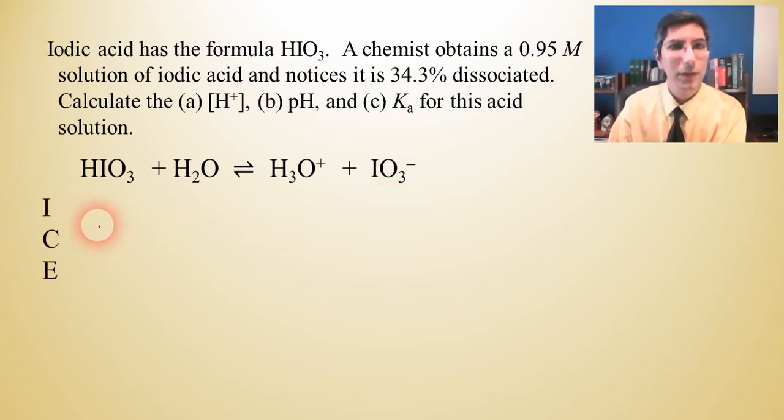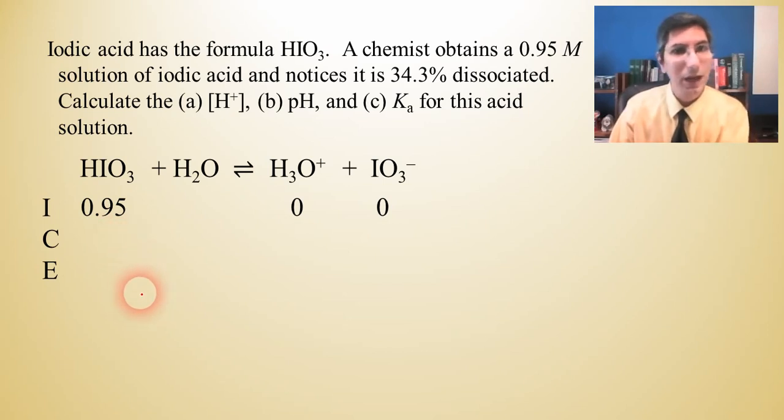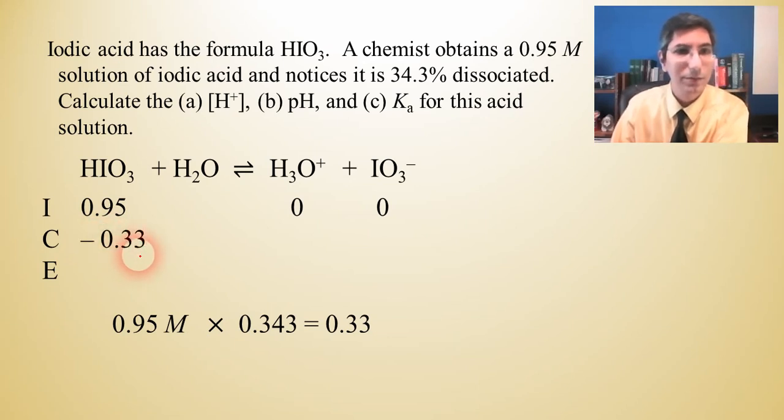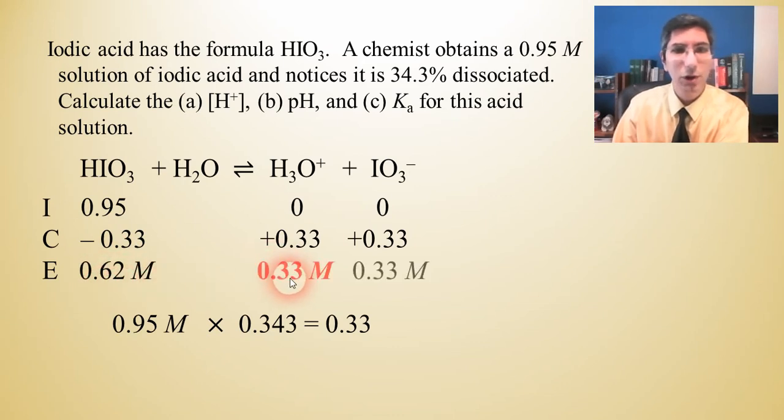Now let's set up an ice box and plug some numbers in here. The HIO3 concentration is 0.95, so we're going to put that in here and the others are zero. So it tells us that it's 34.3% dissociated. Now that means that 34.3% of the 0.95 gets subtracted, gets basically dissociated or broken apart into its ions. So we have to multiply 0.95 by 34.3% or this 0.343 when it's a decimal. So it's 0.33. That means that our change over here is not -X. We know what X is. It's -0.33. And over here, it's going to be +0.33. That's just basic stoichiometry here. Now our equilibrium row, whenever we do the math on this, it's 0.62 molar when you subtract. And of course, these two are 0.33 as well.